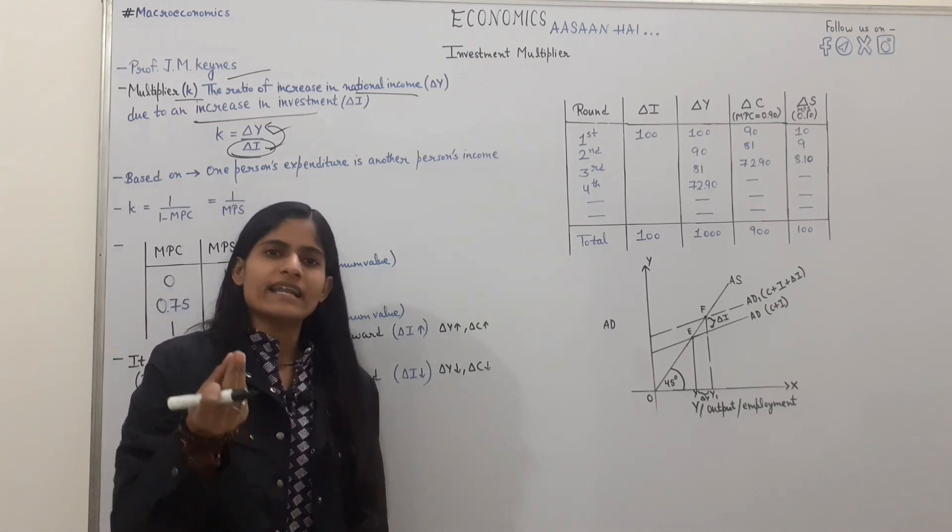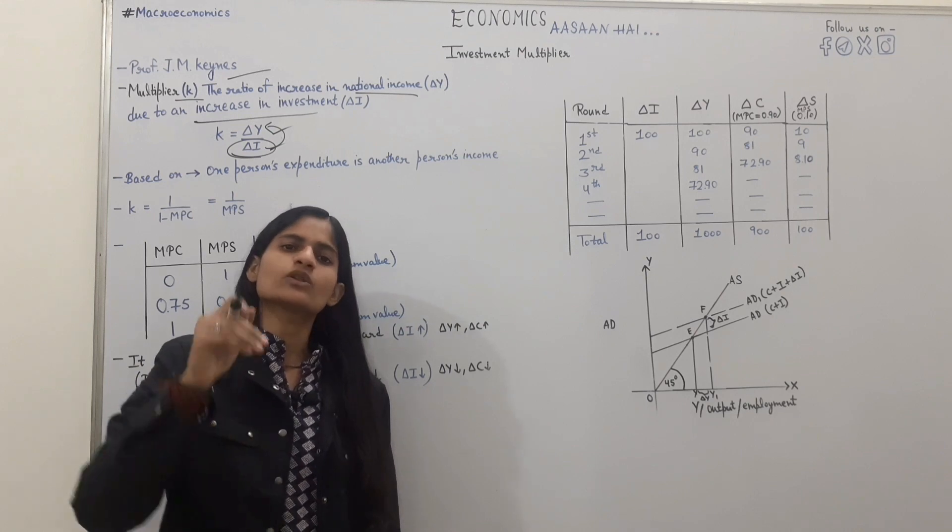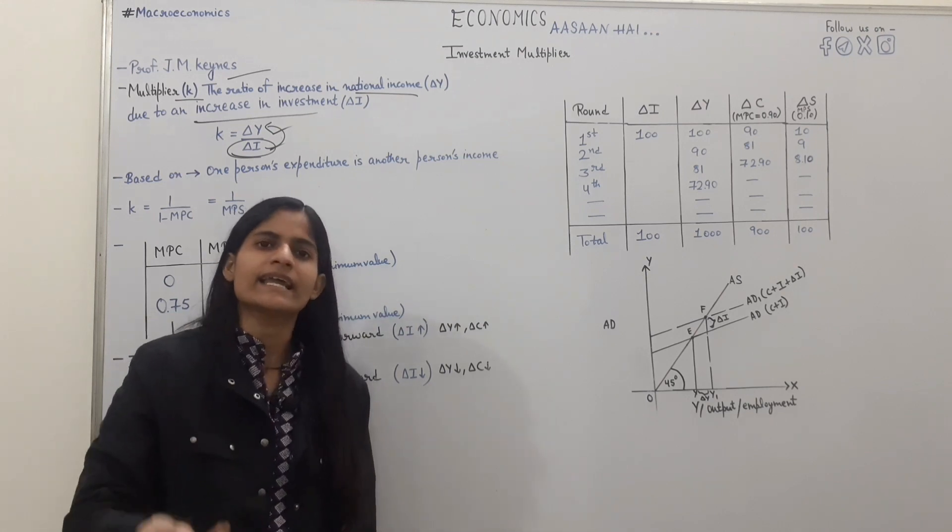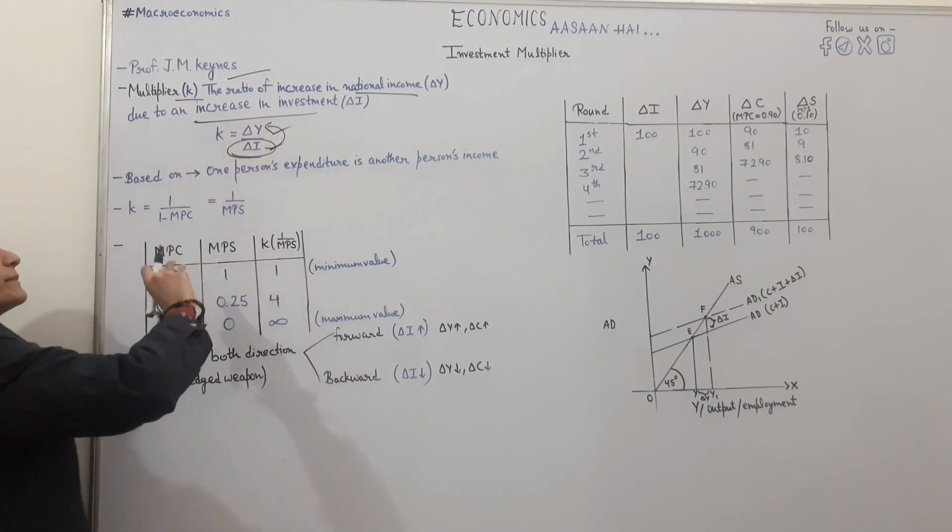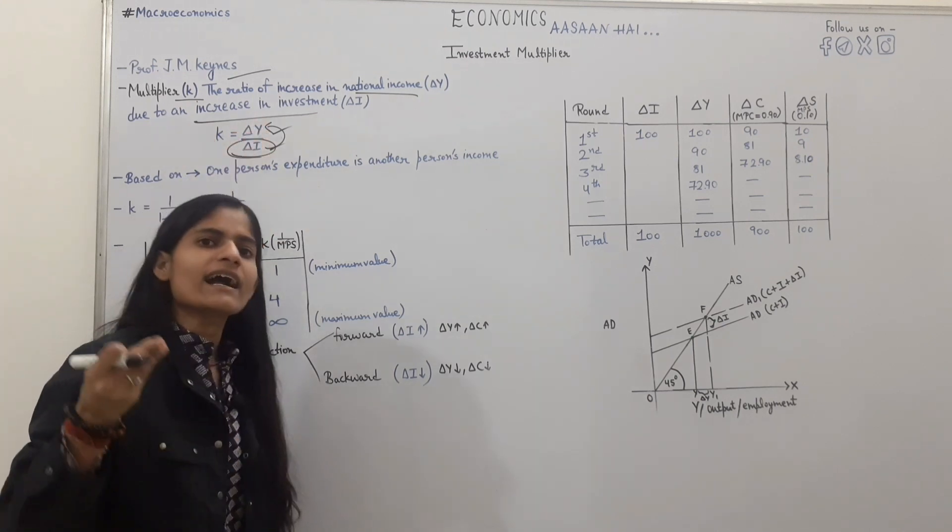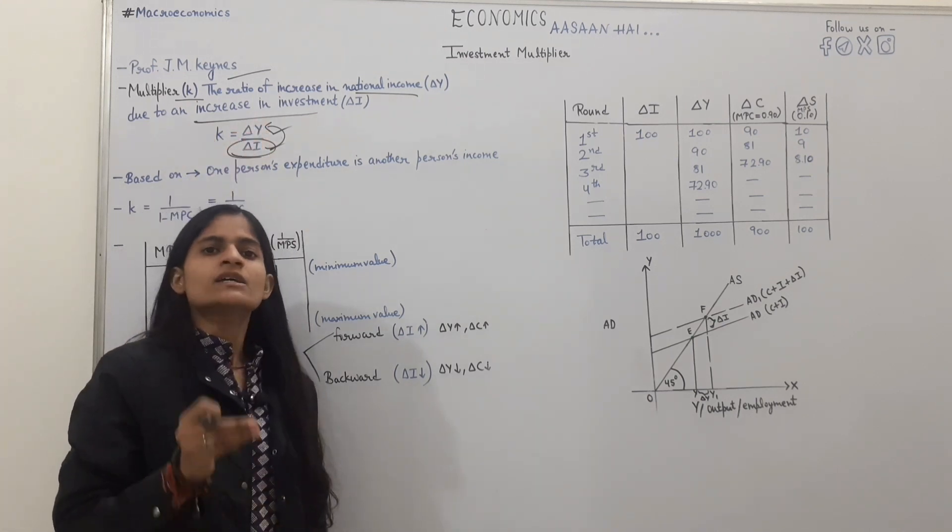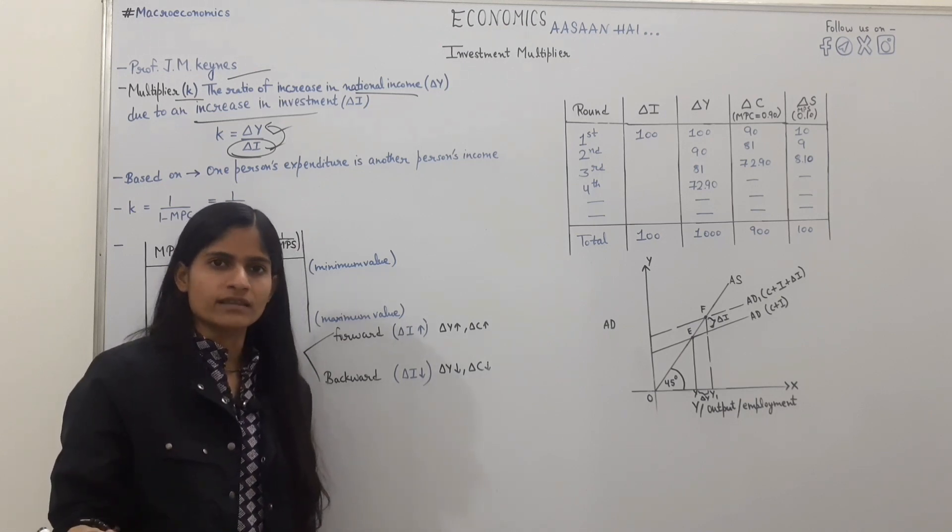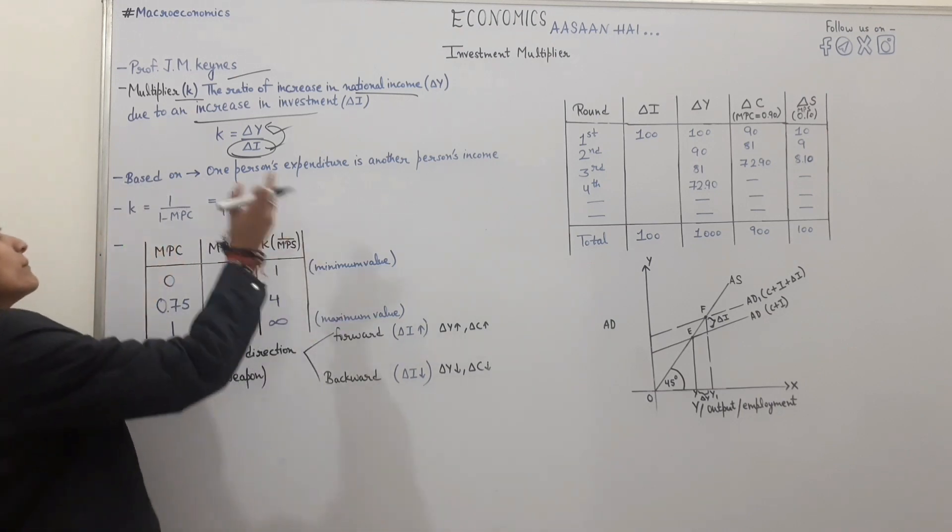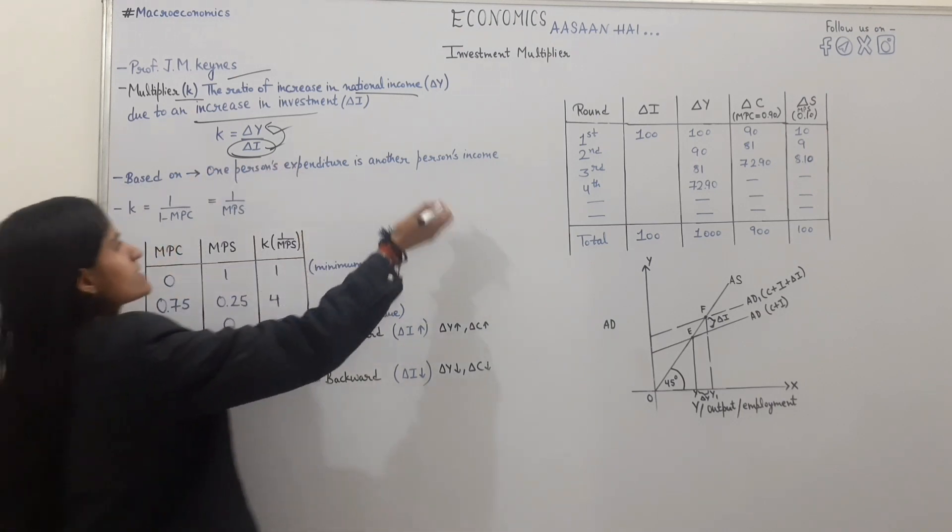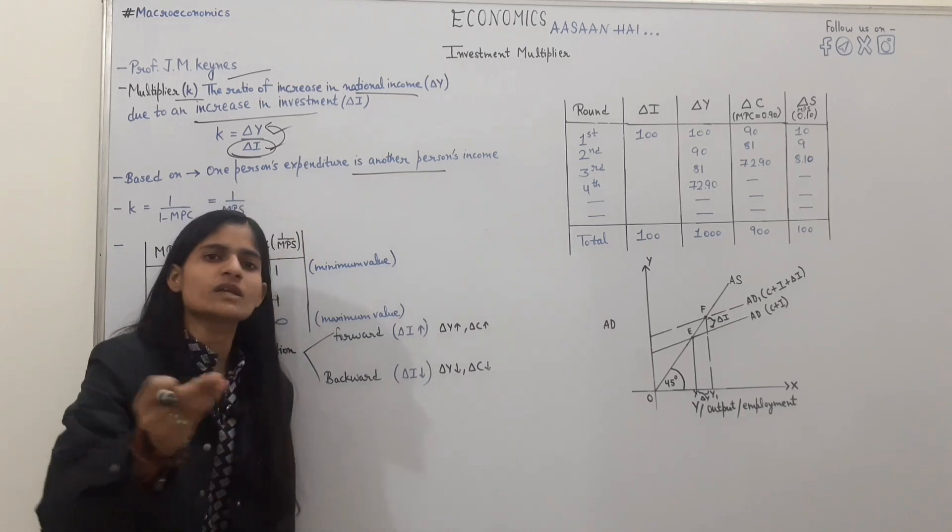We know that if investment increases, multiple times economic income may increase. This concept is based on the value of investment. Why is this? Because one person's expenditure is another person's income.